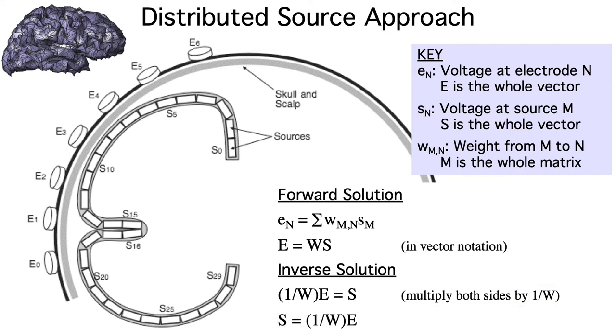We can then rearrange the equation. And now we see that S, the vector of source magnitudes, is equal to the vector of observed voltage values, E, multiplied by the inverse of the matrix of weights, W. So we can directly compute the magnitude at each patch of cortex from our observed data and the weights, which we can estimate from a structural MRI scan.